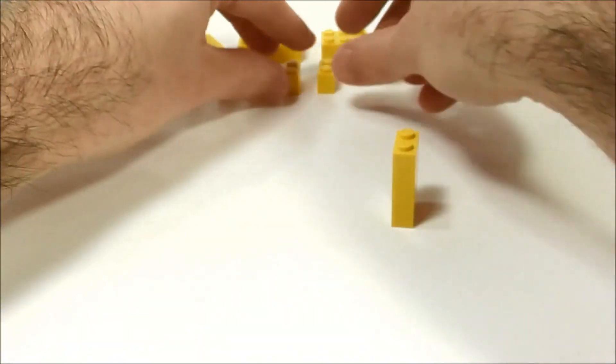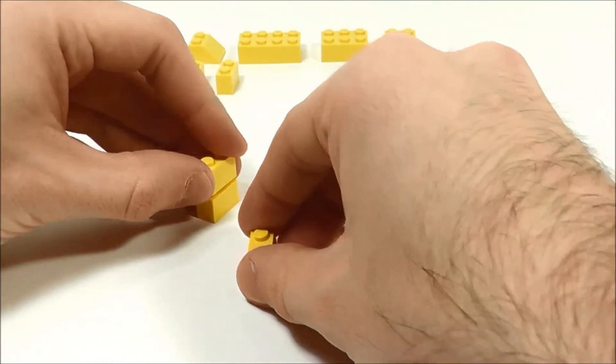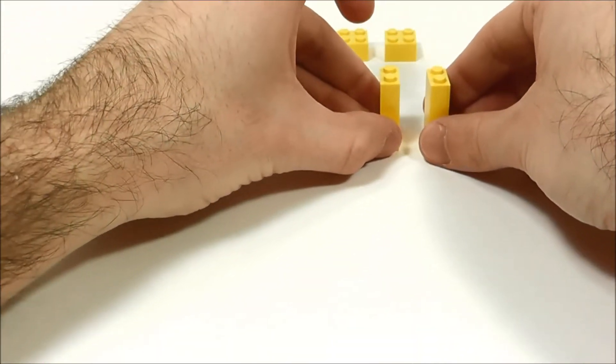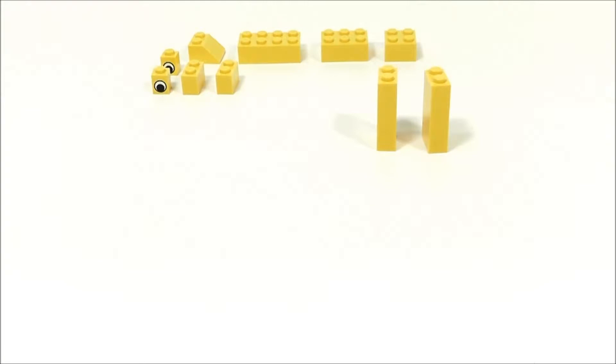That's the front leg right there. You're just going to stack three of those on top of each other, and you'll do the same for the back. This is very easy. So there are the front and back legs. We're just going to set those aside for right now, because we're going to work on the body.